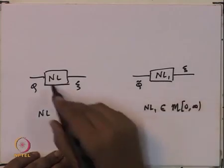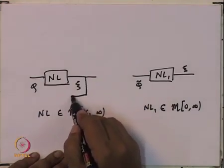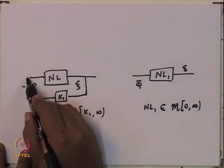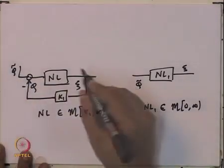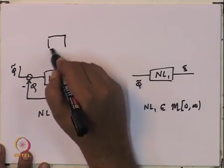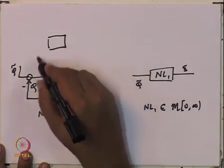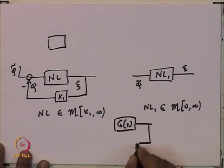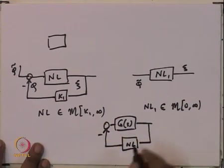How does one get NL1 from NL? One way to get NL1 from NL is by using a feedforward, where you take this gain K1 and feed it forward, and therefore now what you have will be phi tilde. Originally you had a G interconnected with NL, with input U, output Y, input to nonlinearity psi, and output phi.